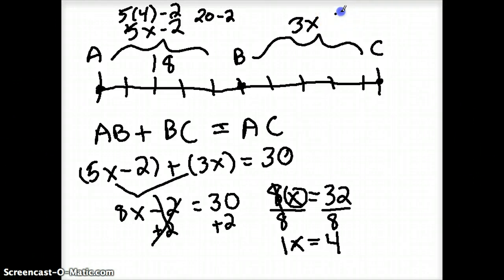This one similarly is 3 times whatever x was. Well, I found x to be 4. So it's 3 times 4 and that equals 12. So I know that AB, that distance from A to B is 18, and I know the distance from B to C is 12.